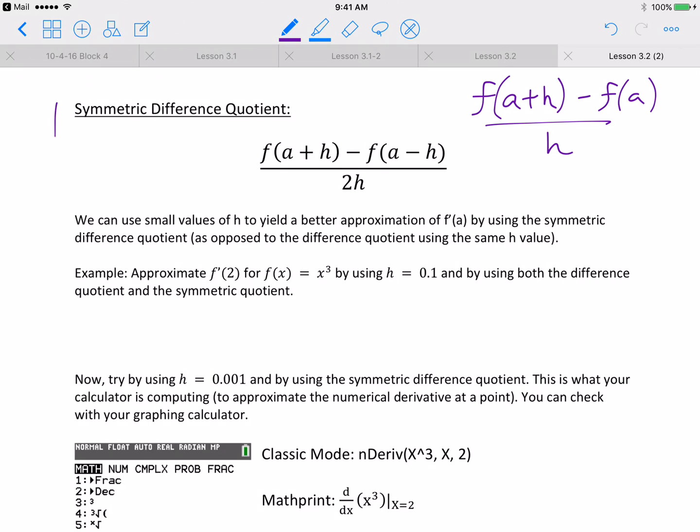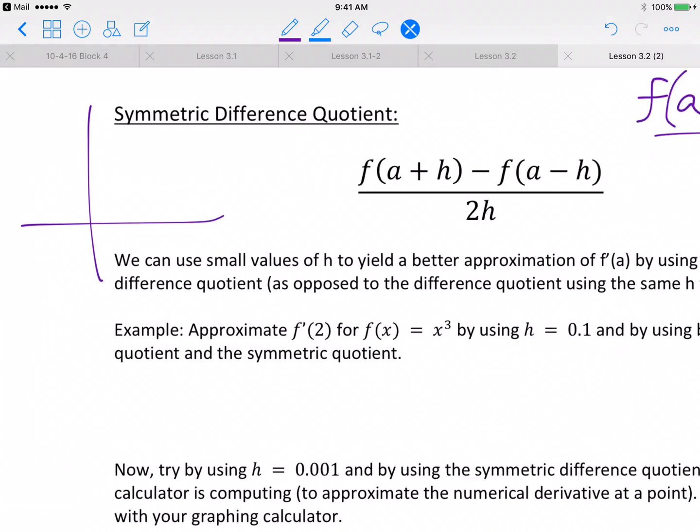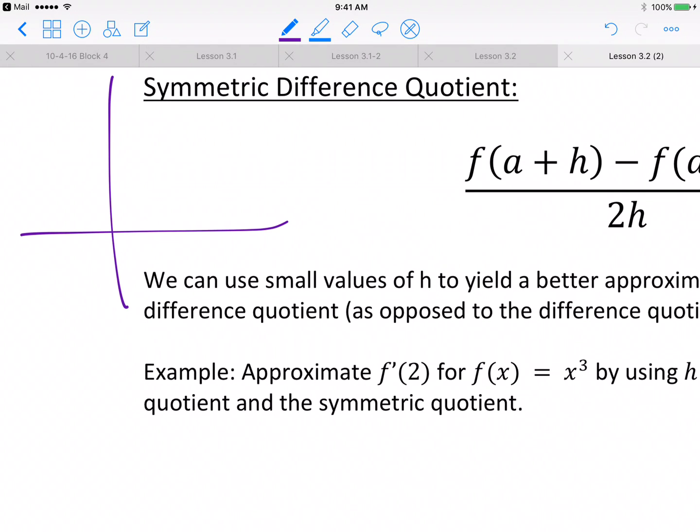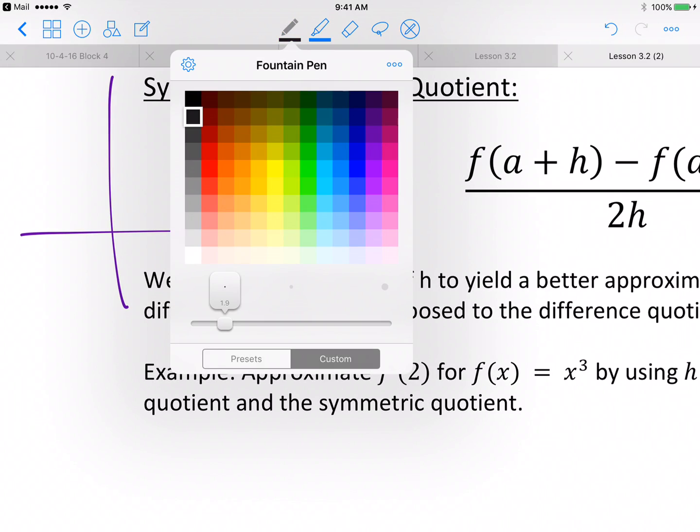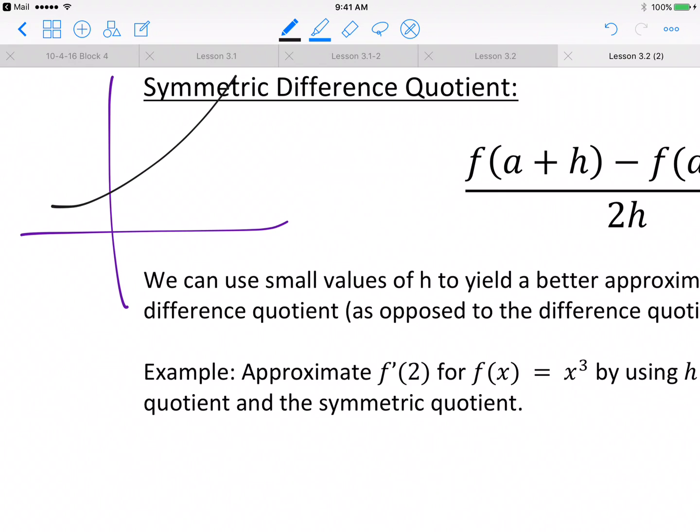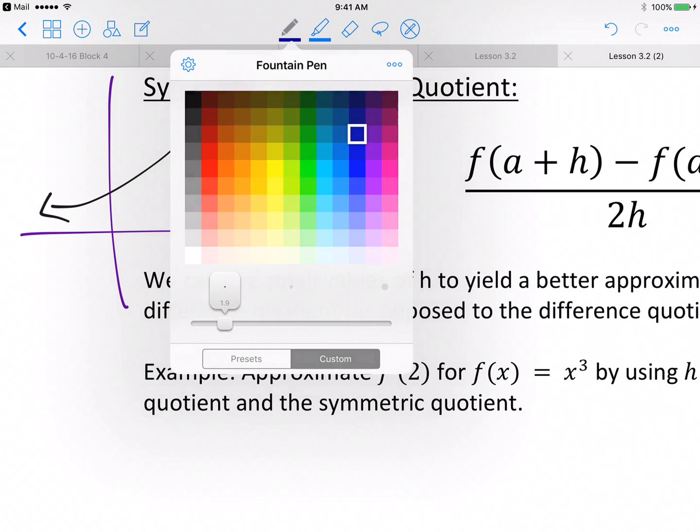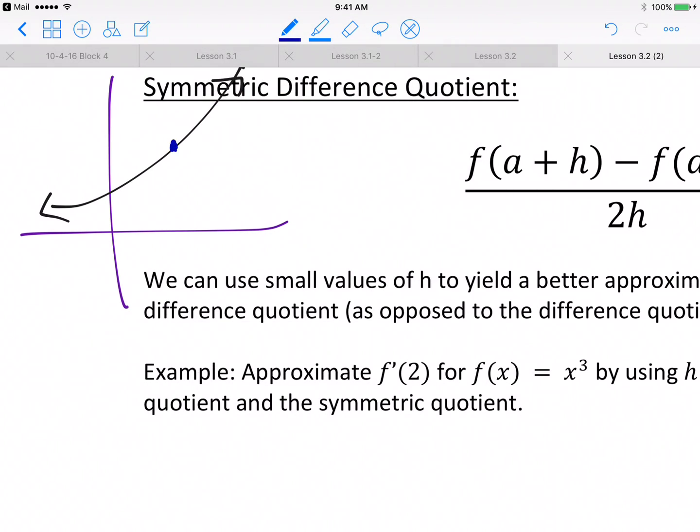So just graphically speaking, I'll do a quick graph on the side right here. Not very pretty, but this will do. So let's say you have a curve and then you're interested in finding the slope of the tangent line at a point, let's say, a.